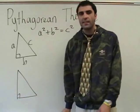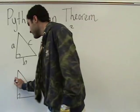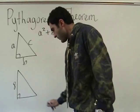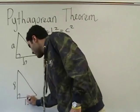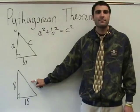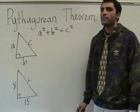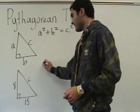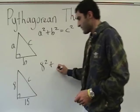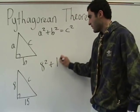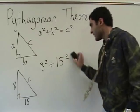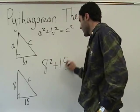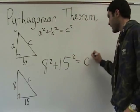Solve for the missing side. What would you like to call this? C. Okay, formula. So it becomes 8 squared plus 15 squared equals C squared.